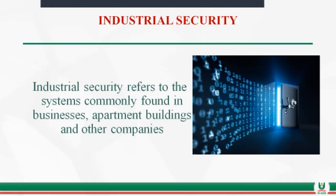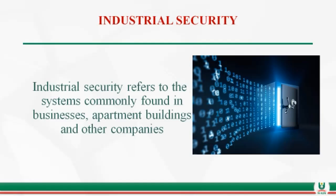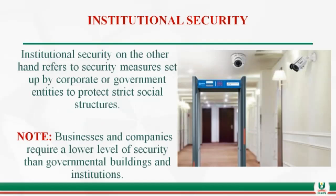Industrial security refers to the systems commonly found in businesses, apartment buildings, and other companies — it has to do with how businesses and companies' structures are secured. Institutional security, on the other hand, refers to security measures set up by corporate or government entities to protect social structures, government buildings, and government institutions.